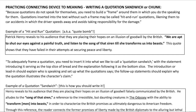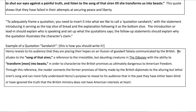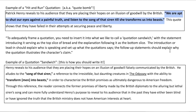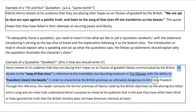To frame a quotation adequately, insert it into a quotation sandwich: a statement introducing it serves as the top slice of bread, and the explanation following it is the bottom slice. The introduction should explain who is speaking and set up what the quotation says. The follow-up statement should explain why the quotation illustrates the character's claim. Here's an example: top slice — Henry reveals to his audience that they are placing their hopes on an illusion of goodwill falsely communicated by the British. Then instead of a full sentence quote, you weave short phrases in: he alludes to 'the song of that siren,' a reference to the irresistible but daunting creatures in the Odyssey with the ability to transform men into beasts, in order to characterize the British promises as ultimately dangerous to American freedom.